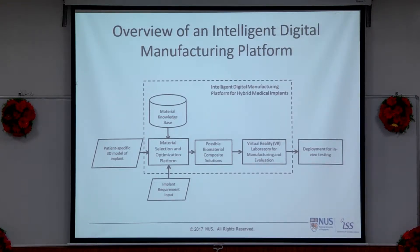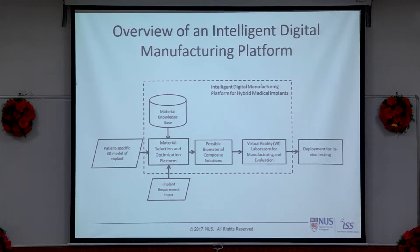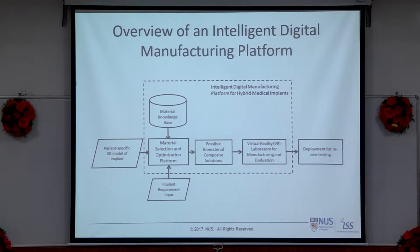This is an overview of the proposed intelligent digital manufacturing platform. We start with patient-specific modelling of the implant — we get the model of the patient's body, extract information, and design the implant accordingly. Then we input the requirements: maybe it needs to be soft, hard, or flexible. We undergo a material selection and optimisation platform, which extracts information from the material knowledge base on the internet and generates possible solutions. From there, we evaluate these solutions through a virtual VR laboratory, and once successful, we push it out through deployment or in vivo testing.